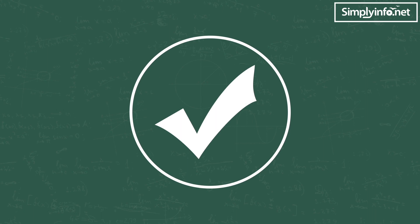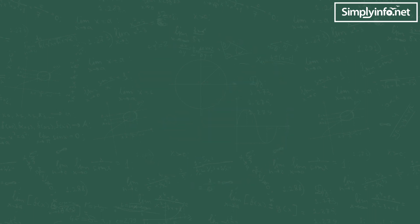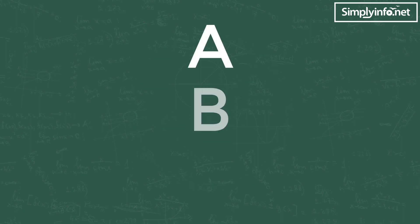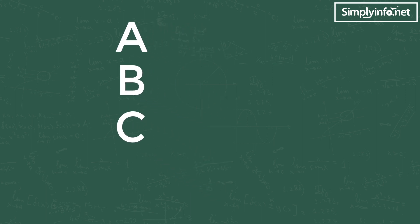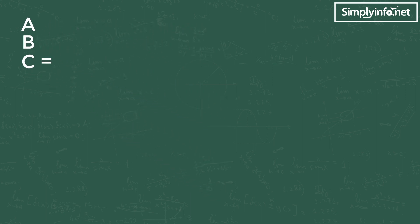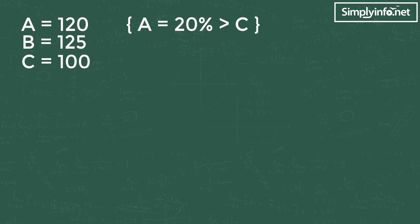The answer is yes if you know this concept. Let's go to the problem now. We have three numbers A, B, and C. We always consider C as 100% in this type of problem. So A becomes 120% because it is 20% more than C, and B becomes 125% because it is 25% more than C. So A is 120, B is 125, C is 100.